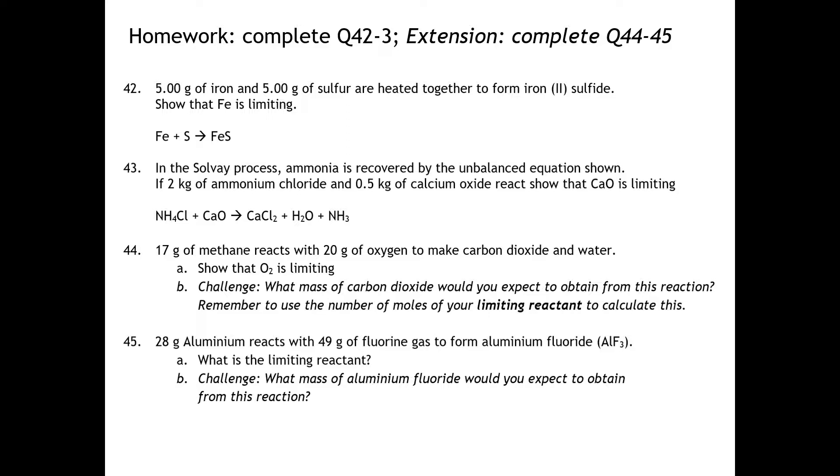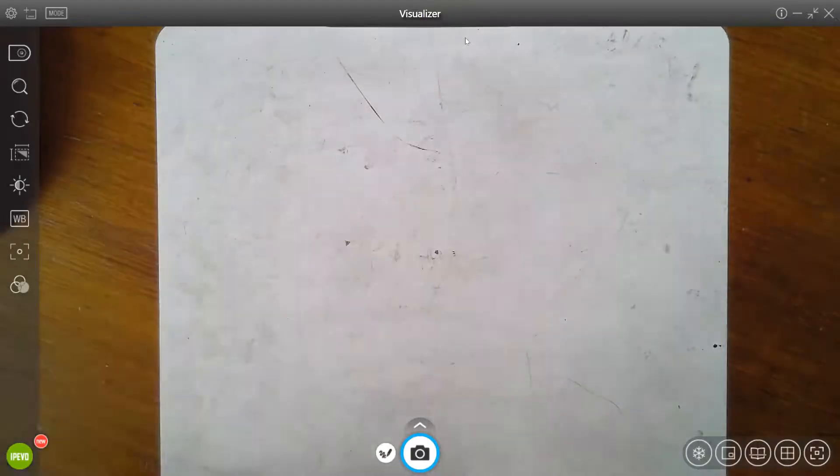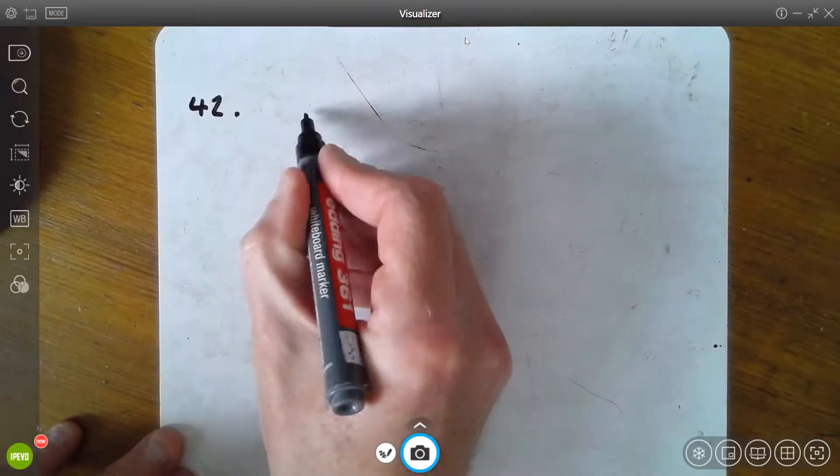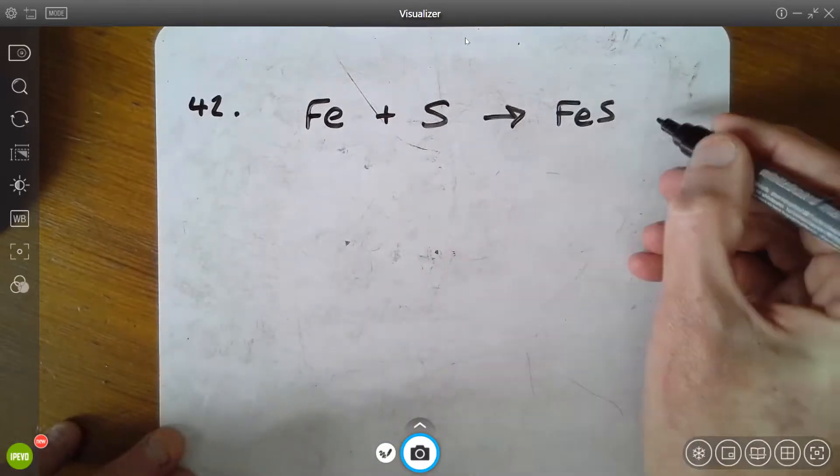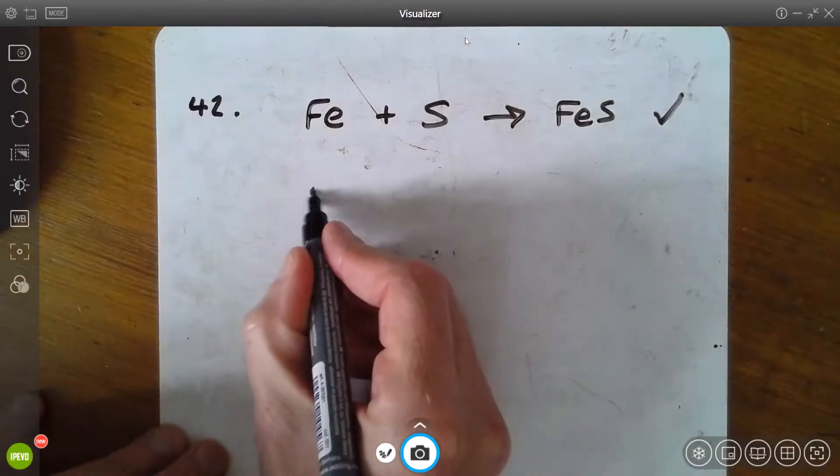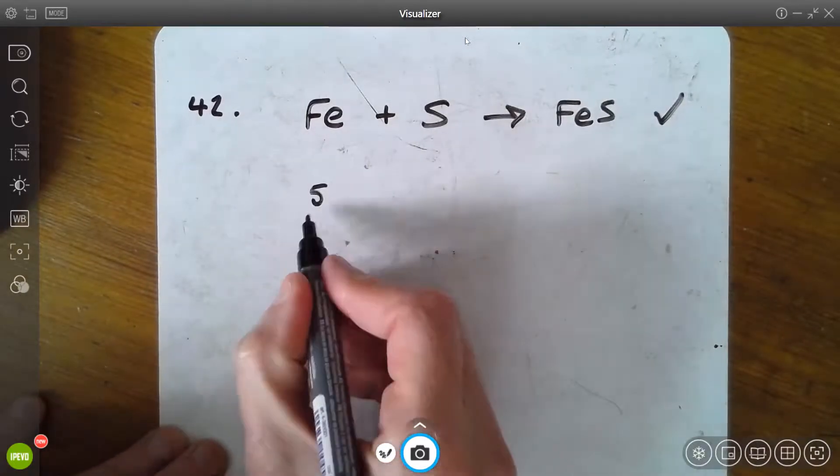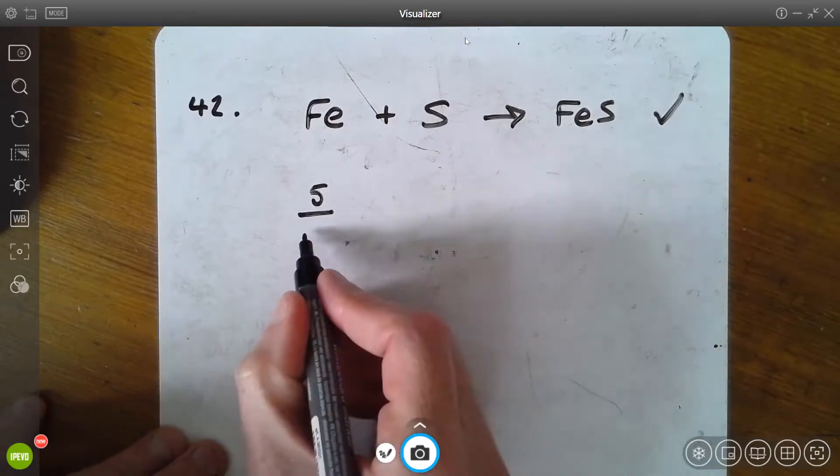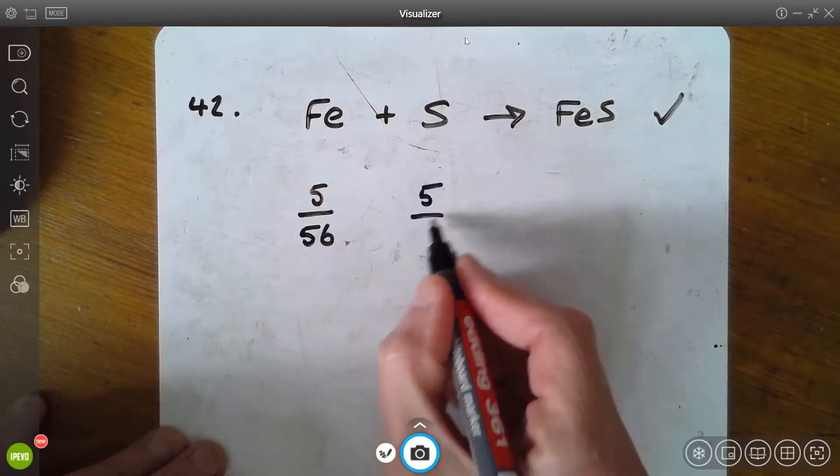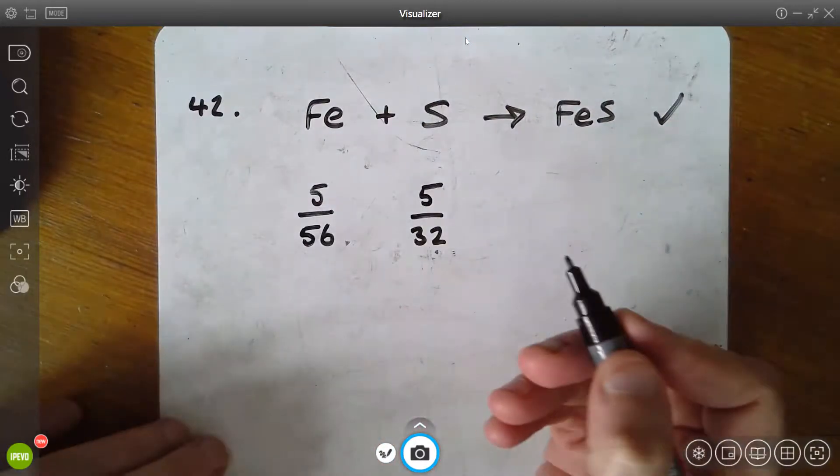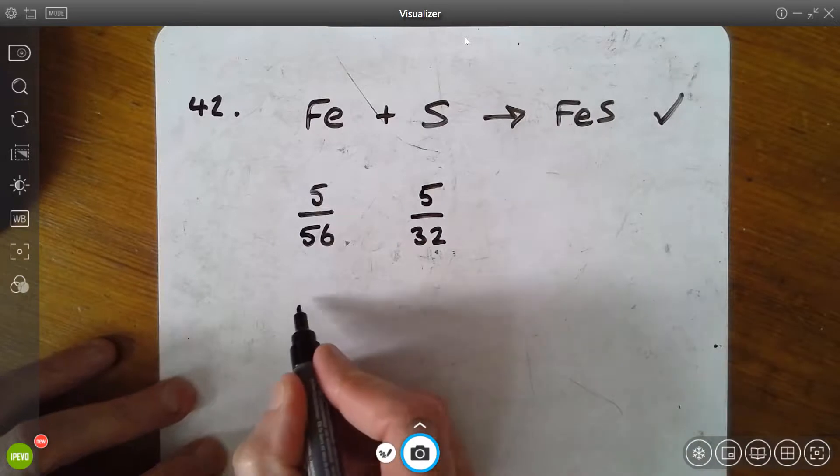First of all then, five grams of iron and five grams of sulfur are heated together to form iron(II) sulfide. Show that iron is limited. So let's just go to the visualizer. For question 42 we have this equation, Fe + S → FeS, and hopefully we noted that this is actually balanced so nothing else to do. We have the masses of each and they are expressed in grams. We have the relative atomic mass for iron—if we look it up in our periodic table that's 56—for sulfur that is 32.